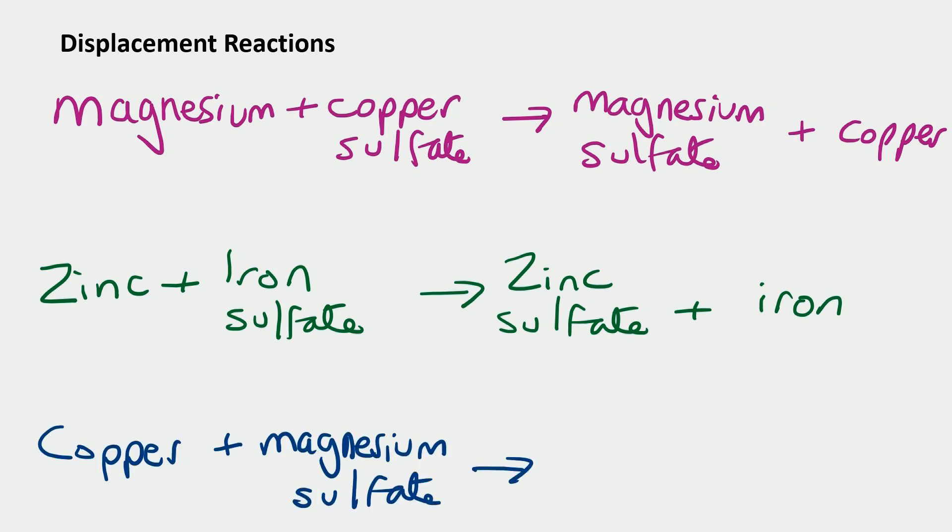Now let's look at one that didn't react. If we put a piece of copper with magnesium sulfate, there would be no reaction. And that's because copper is less reactive than magnesium. So it can't take the sulfate. It can't displace magnesium. And therefore, there's no reaction.